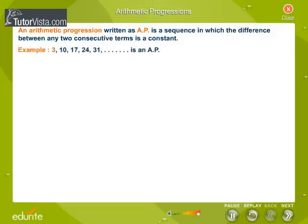Example: 3, 10, 17, 24, 31 and so on is an arithmetic progression.